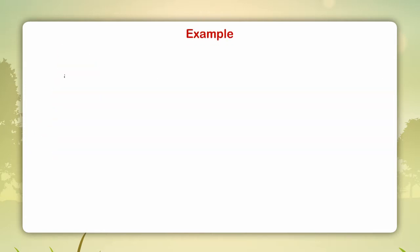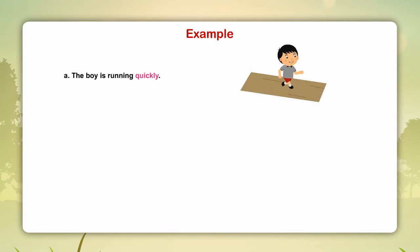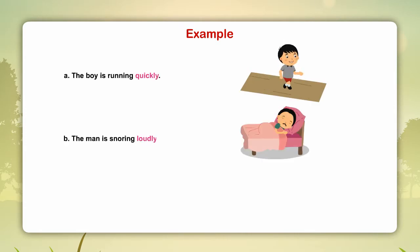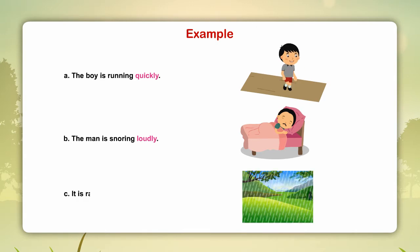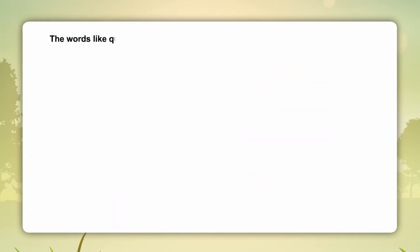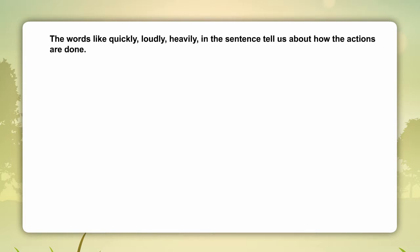For example: The boy is running quickly. The man is snoring loudly. It is raining heavily. The words like quickly, loudly, and heavily in the sentence tell us about how the actions are done.